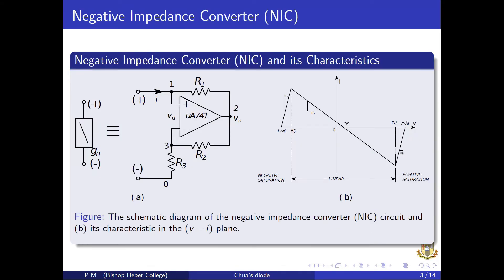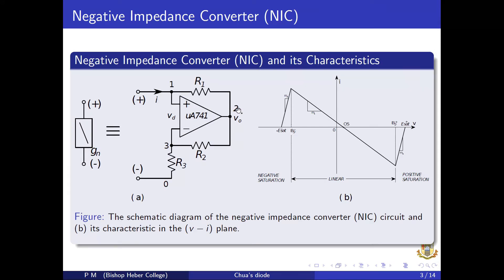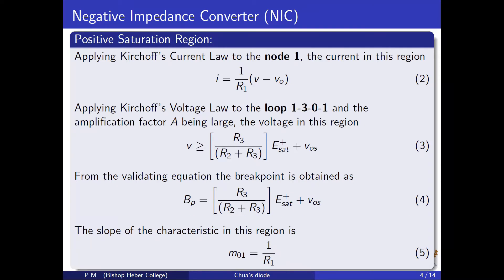A negative impedance converter is a good example of a circuit having a piecewise smooth characteristic. It consists of an operational amplifier incorporating both positive feedback via R2 and negative feedback via R1. The circuit of the negative impedance converter is shown here, and its characteristics are shown here. By applying Kirchhoff's current law to node 1 shown in this circuit — this is node 1, node 2, node 3, node 0 — the current in the positive saturation region is I = (1/R)(V − V_out), where V is the input voltage and V_out is the output voltage of the operational amplifier.